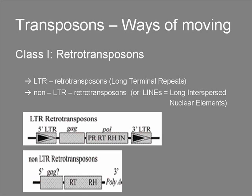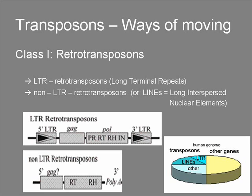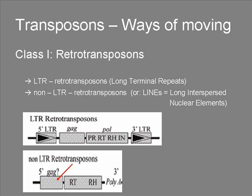Long interspersed nuclear elements — LINEs — got their name due to their common occurrence and widespread distribution in the genome. They occupy 17% of the human genome, with a size of 6 to 8 kilobases each. LINEs also have two open reading frames: they encode one protein that binds nucleic acid, though its function is not yet clear, and a multifunctional protein with activities for DNA binding, cleavage, and reverse transcription. These elements are not flanked by terminal repeats, but have a poly-A tail at their 3' end.